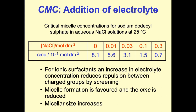Adding salt will also increase the size of the micelle, because it reduces the repulsion in the head group that would have restricted the number of molecules present in the micelle. So it has the effect of increasing both the size and the aggregation number — the number of surfactant molecules within the micelle.